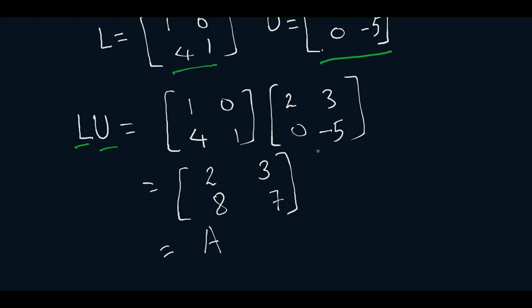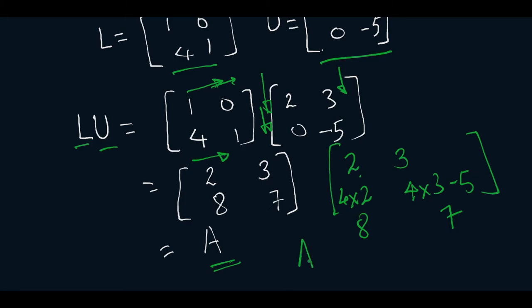When we multiply this matrix, this row multiplied by this column will give us 2, and this row multiplied by this column will give us 3. Now when we multiply this row with this column we get 4 into 2 which is 8, and 4 into 3 minus 5 which is 7. So this is our A matrix.